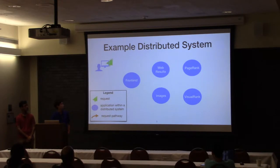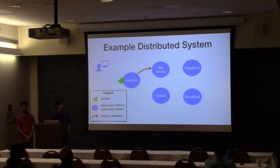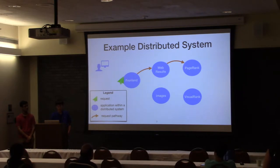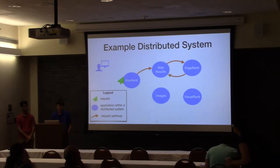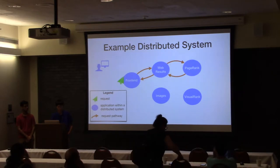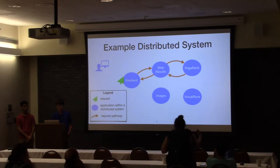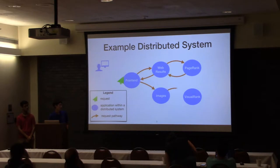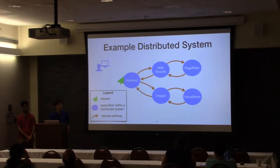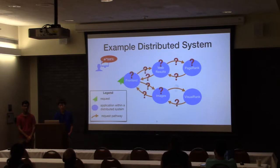The user first makes a request to the front-end service. Then the front-end makes a request to the web results service, which then contacts the page rank service. It returns results to the web results, which are returned back to the front-end. Then it gets the images, which uses visual rank, and so forth. Now suppose that a user is unhappy about search results being returned too slowly.